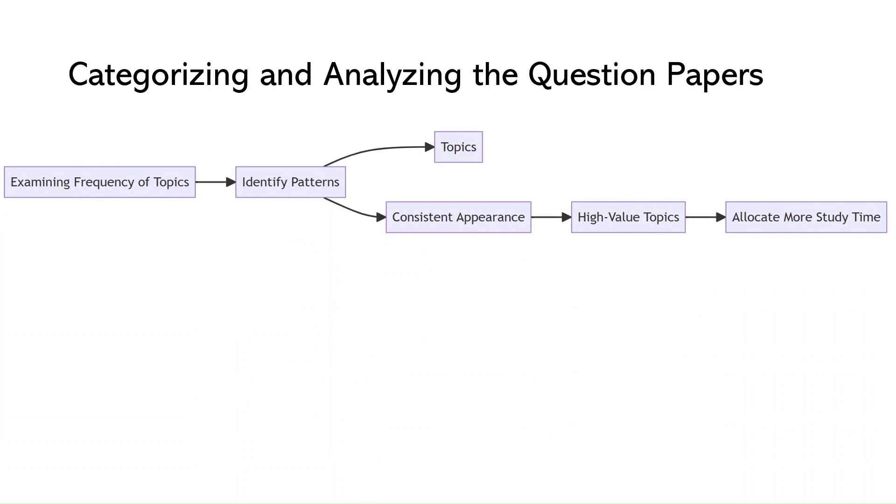Start by analyzing the frequency of topics in the question papers. Look for patterns and observe which subjects or topics appear consistently over the years. This will give you a clear indication of topics that hold significant weightage in the exam. For example, after analyzing the question papers, you find that the topic measurement of strain in deformed rocks from the structural geology section appears almost every year in some form or another. This suggests it's a high-value topic likely to be tested again in the upcoming exam. Knowing this, you can allocate suitable time to form a strong grip over this subject.